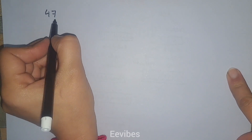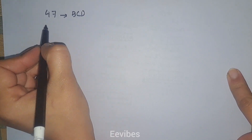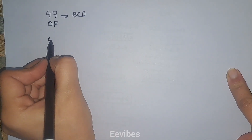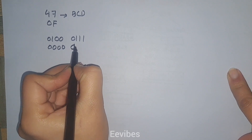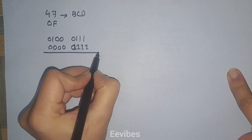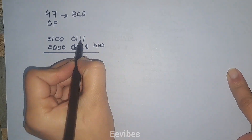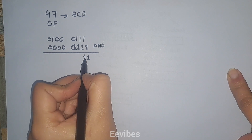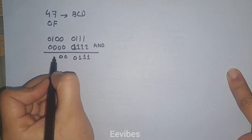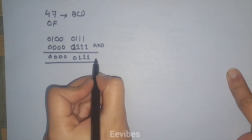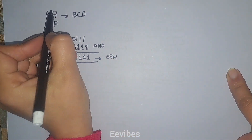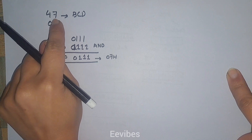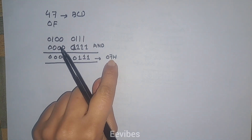Let's consider an example. Taking the number 47 hex as our packed BCD number, if we AND it with 0F hex, let's perform the bitwise AND operation: 0100 0111 AND 0000 1111. Since AND gives 1 only when both bits are 1, the result is 0000 0111, which is 07 hex. So the packed BCD number has been converted into unpacked data for the lower nibble.